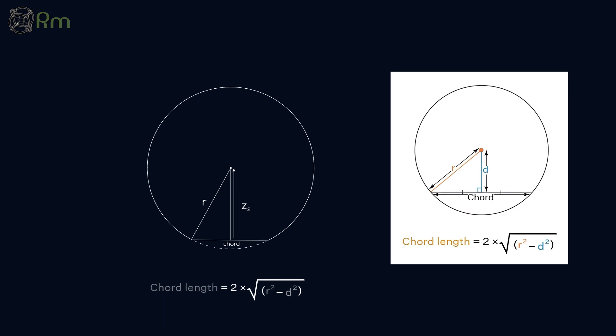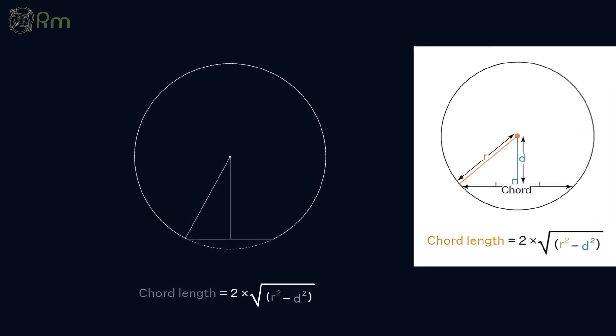So what we are going to actually do is to calculate this dimension Z2 when limit is applied to chord length. We are going to make this chord length as small as possible.